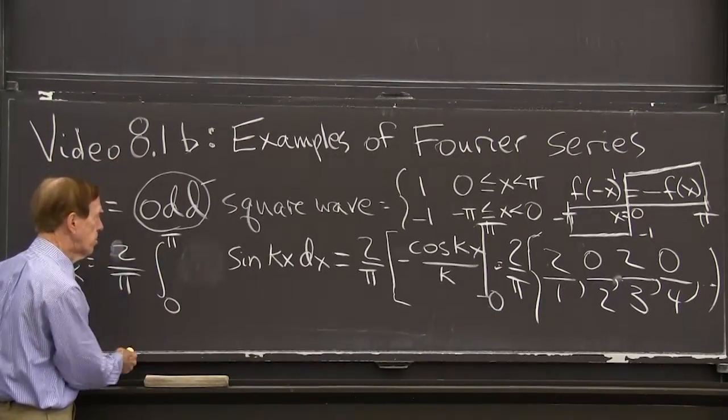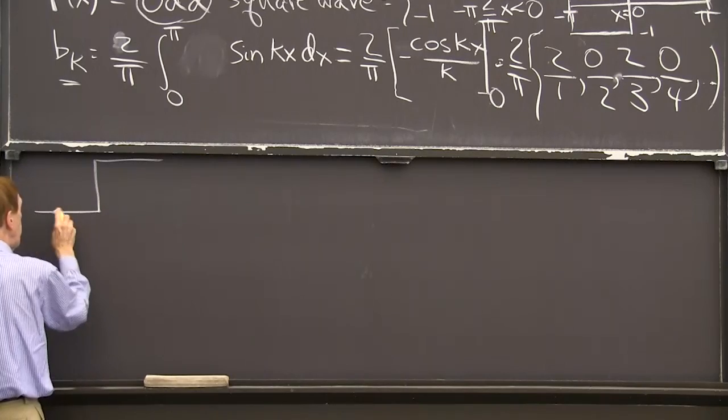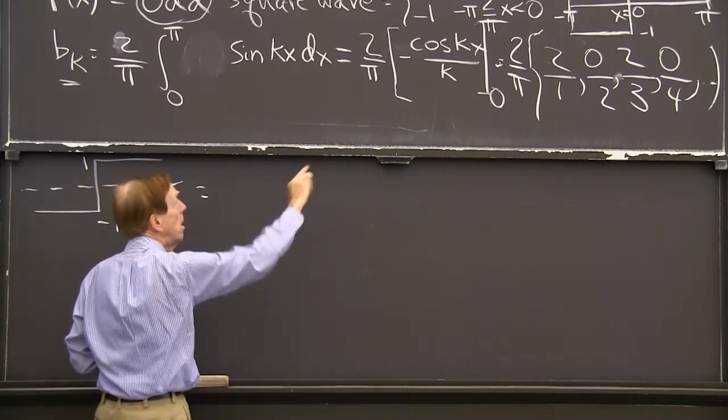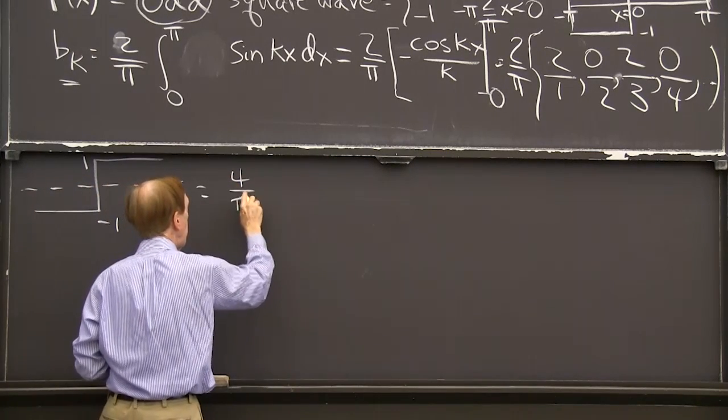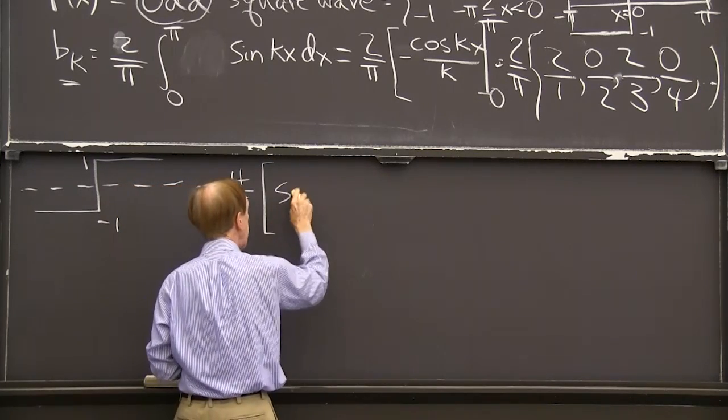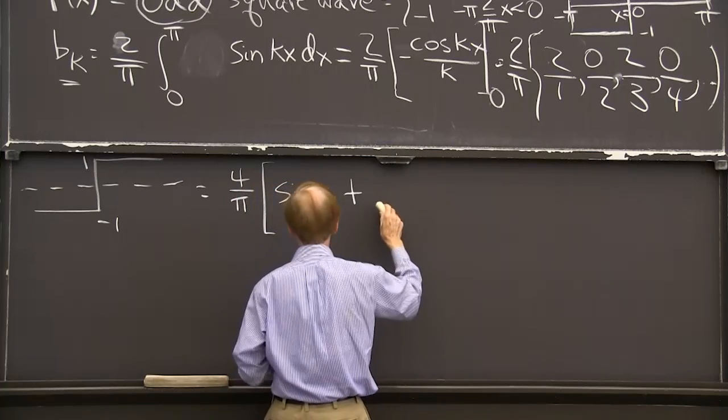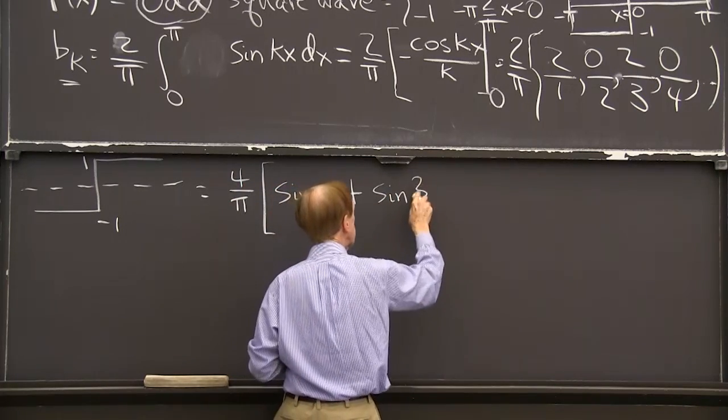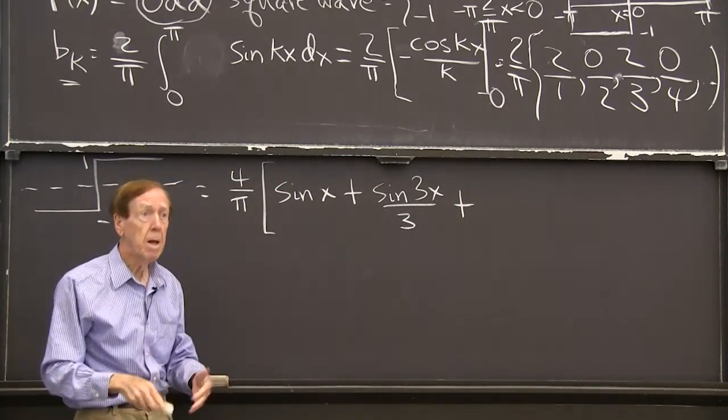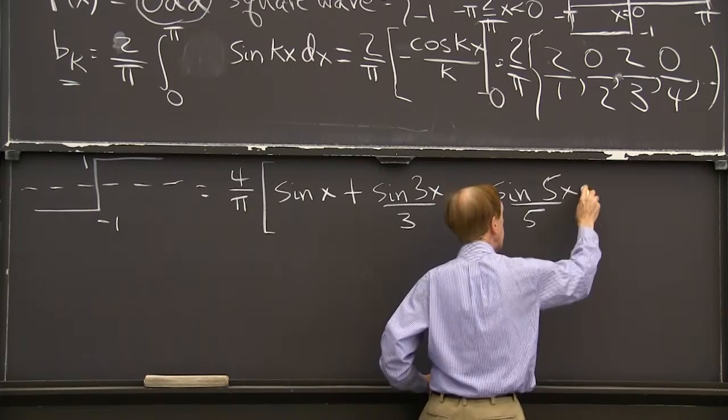so if I use those numbers, I'm saying that the square wave, this function, the minus 1 to 1 function is equal to, let's see, I might as well take that, 4 over pi times 1. So that's 1 sine x, 0 sine 2x's, then 4 over pi sine 3x's, but with this guy there's a 3, 0 sine 4x's, sine 5x comes in over 5, and so on.